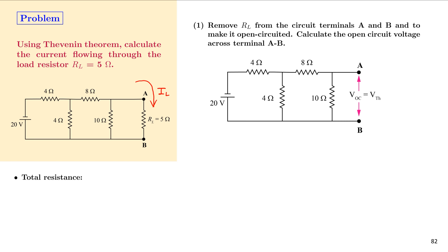The first step is to remove RL from circuit terminals A and B, making it open-circuited. We then calculate the open-circuit voltage across terminals A and B. Terminals A and B appear across the 10 ohm resistor, so VOC is simply the voltage drop across the 10 ohm resistor.